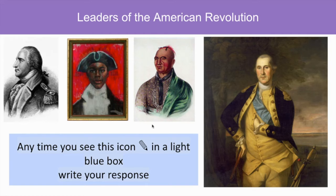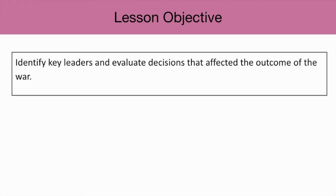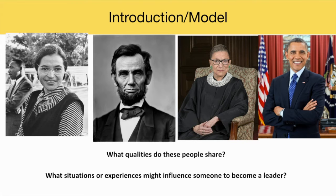In the Leaders of the American Revolution lesson, students will identify key leaders and evaluate decisions that affected the outcome of the war. You can use the following question to have students engage in a turn-and-talk with a partner in response to the photos on the first slide: What qualities do these people share? What situations or experiences might influence someone to become a leader?